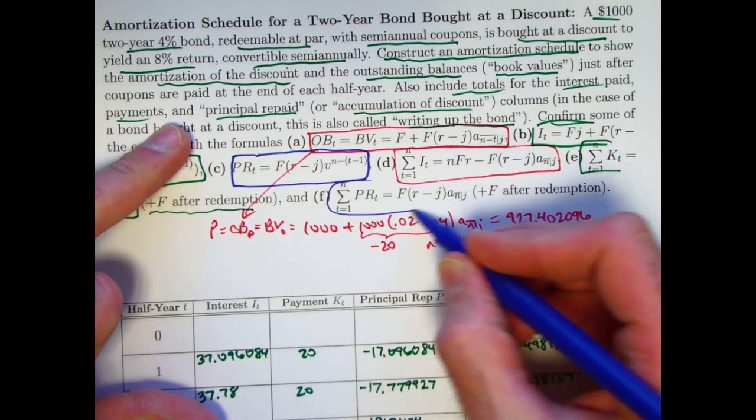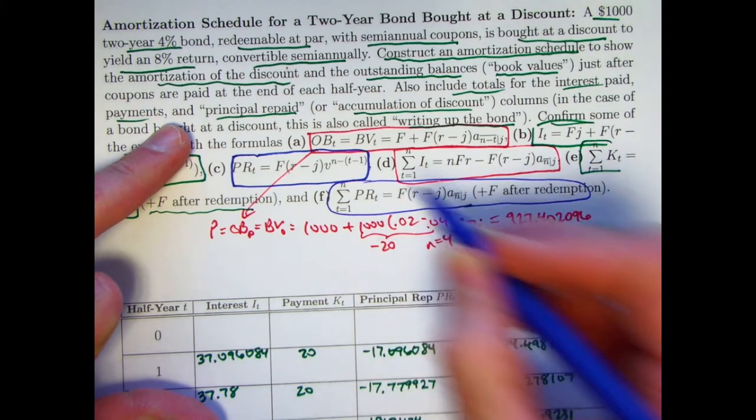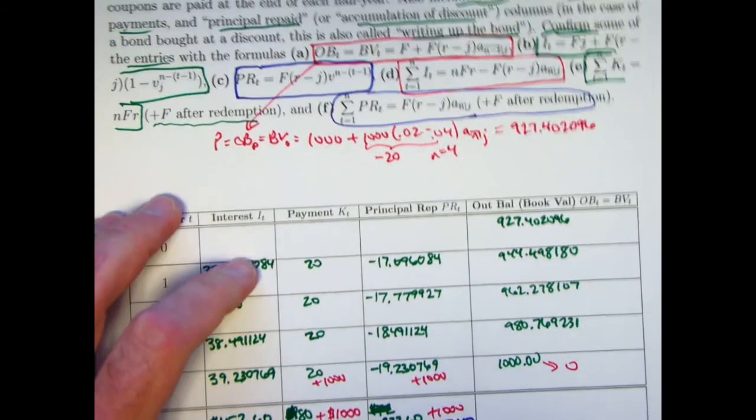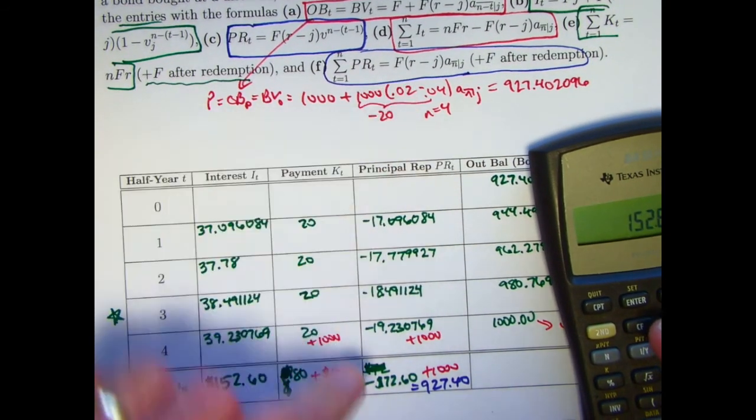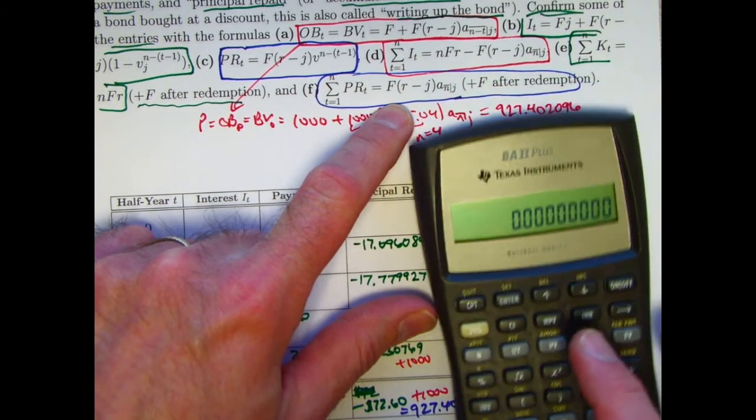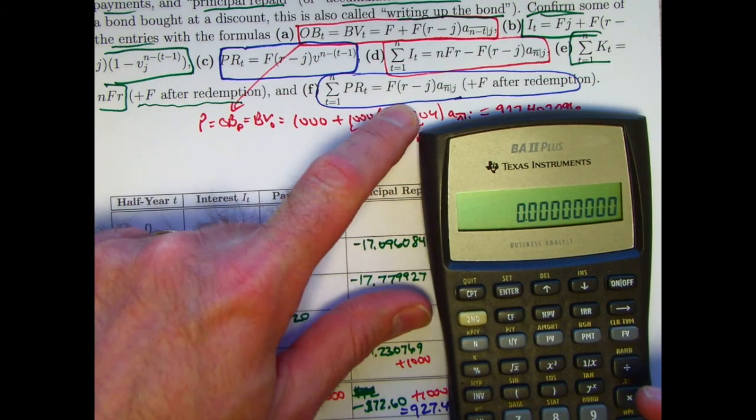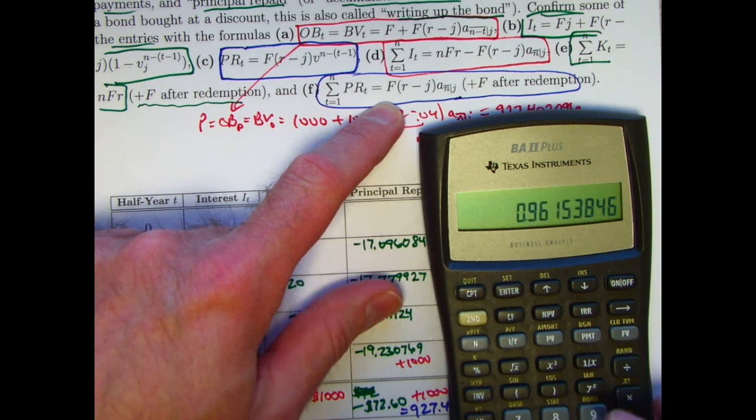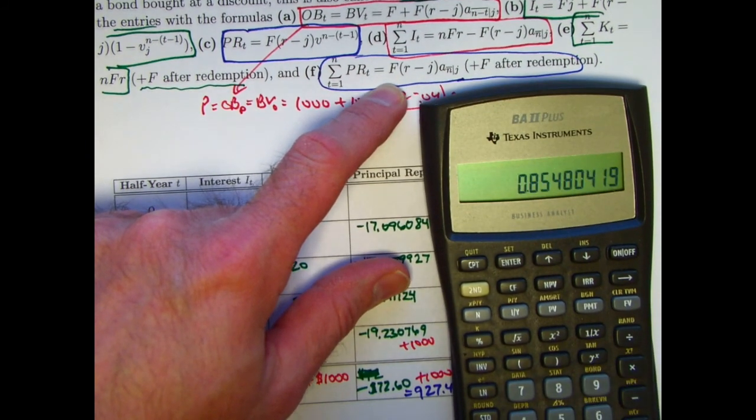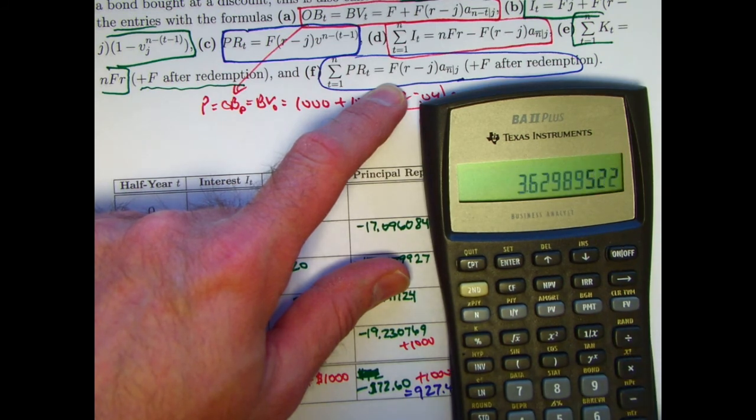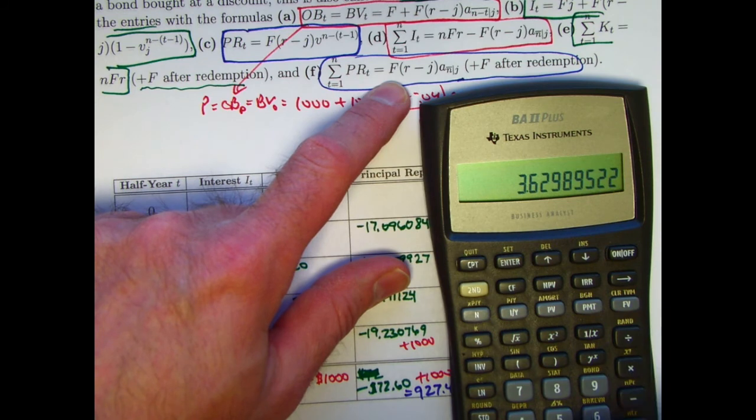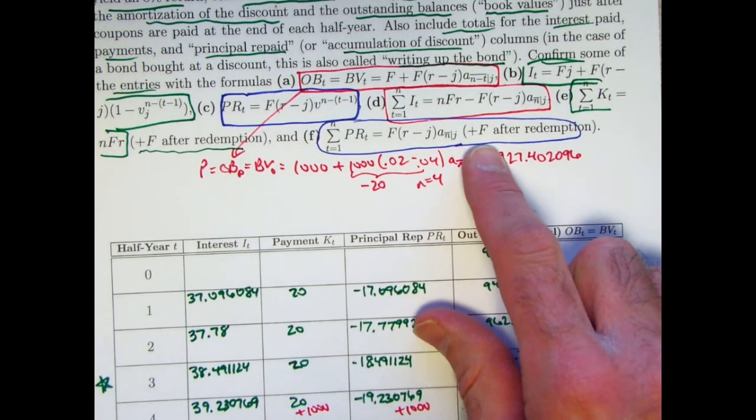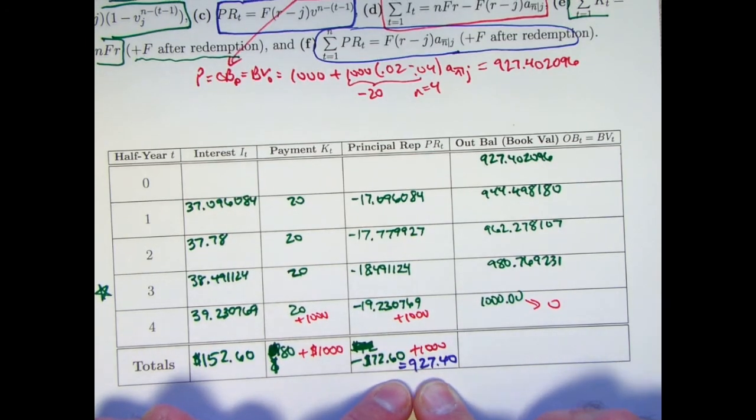And finally, we add up all the quote unquote principal repaids before redemption. You get this after redemption, you add on another thousand. And this will be negative as this is here. And again, we've done this before. Again, the a four was three point something times negative 20. I guess I better do it again. Just to the fourth power here. Subtract from one, divide by point zero four times this thing again is negative 20. Negative 72.60. That is the same as what we have down here. Then plus a thousand after redemption brings you to 927.40.